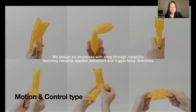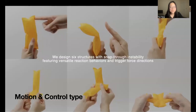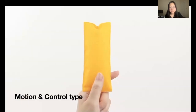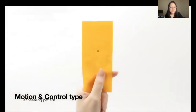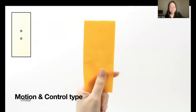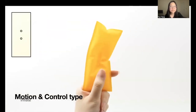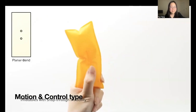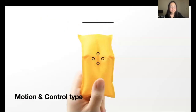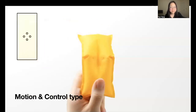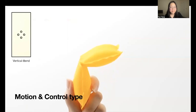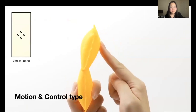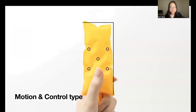By changing the layout of heat-sealing patterns, we can get six types of structures, each with different reaction behaviors. Two points on the pattern correspond to a planar band. Four points correspond to a vertical band. And five points will achieve a twist.